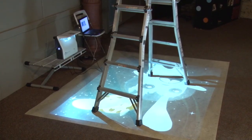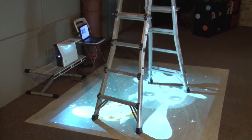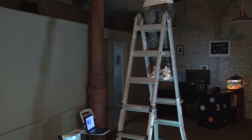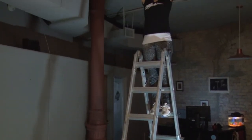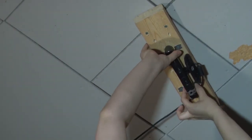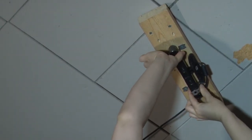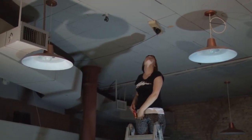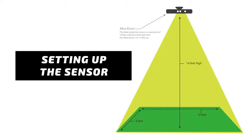Setting up your camera: position your camera or sensor directly above the middle of the projection area, pointing down. The bottom of the camera should be on the same side as the bottom of the image on the floor. This camera position is the same for all three floor projection setups.